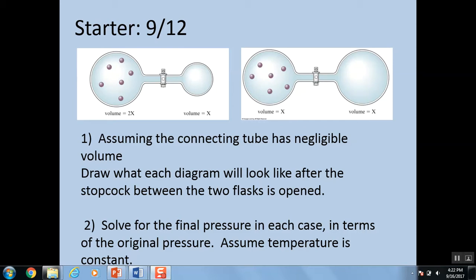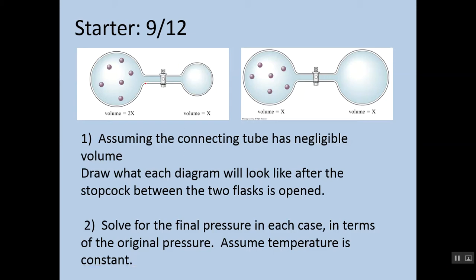Question number one says: assuming the connecting tube has negligible volume, draw what each diagram would look like after the stopcock between the two flasks is opened. The stopcock is what prevents the gas from getting from one flask to the other. If it opens and the gas starts moving over, what should both pictures look like? I'm going to move this onto a black screen and draw it for you.